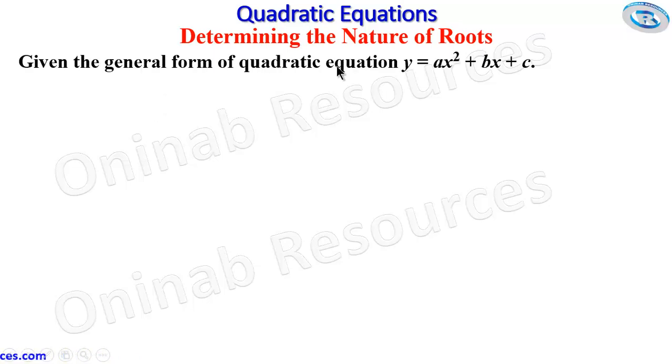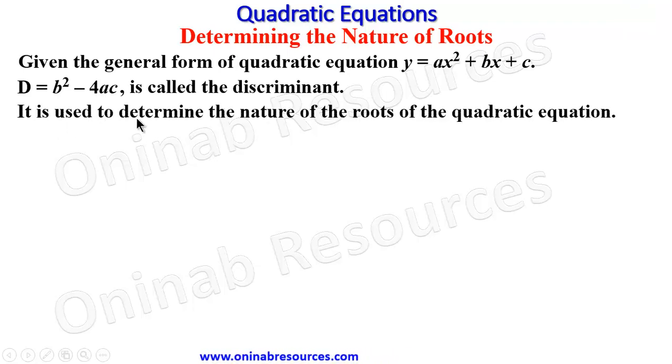Given the general form of quadratic equation y = ax² + bx + c, D = b² - 4ac is called the discriminant. It is used to determine the nature of the roots of the quadratic equation.